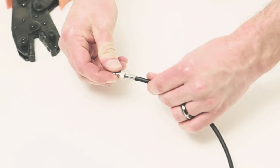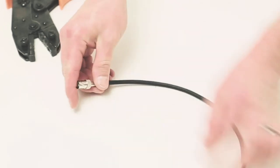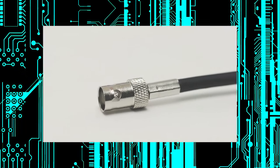Finally, give it a tug to make sure it is properly seated. You have successfully crimped a BNC female connector.